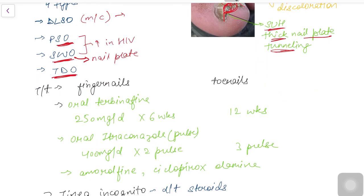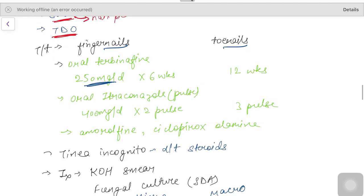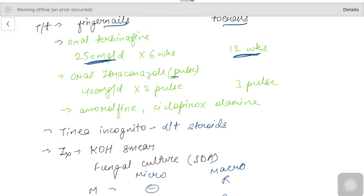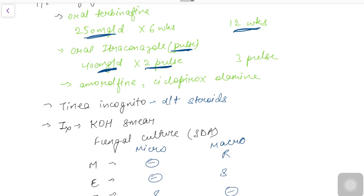Treatment of onychomycosis differs by site. For fingernails: oral terbinafine 250 mg/day for 6 weeks. For toenails: oral terbinafine 250 mg/day for 12 weeks, or oral itraconazole pulse therapy — 400 mg/day for 7 days, then 3 weeks off; two pulses for fingernails, three pulses for toenails. For mild infections, topical amorolfine or ciclopirox olamine can be used.